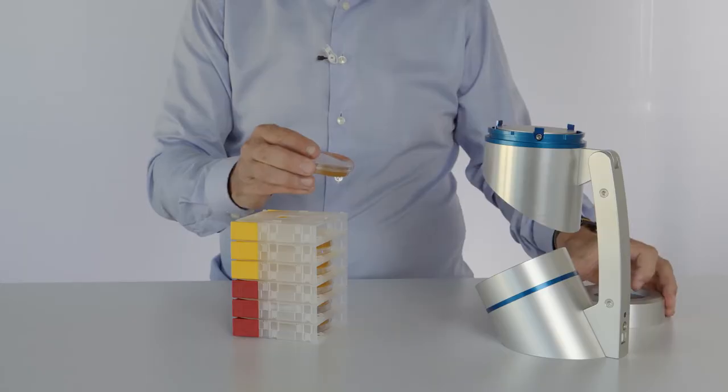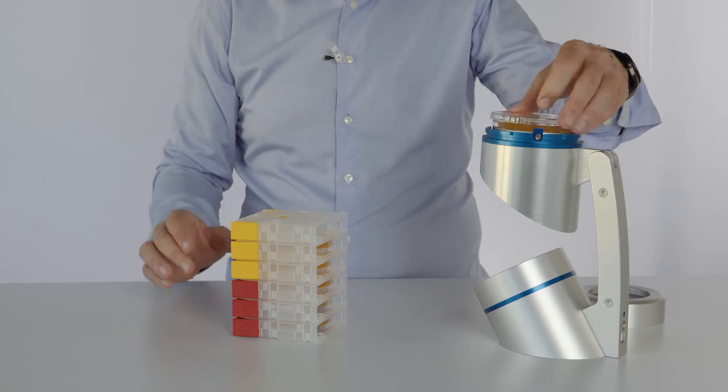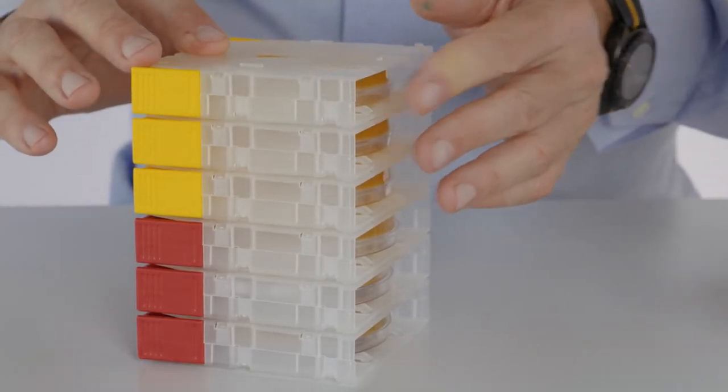When you need an air sample, you remove a plate, take the sample and place the Petri dish back in the dispenser.